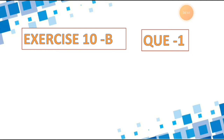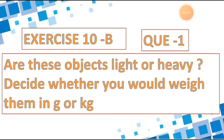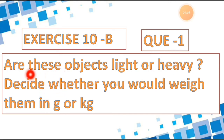Write down Exercise 10b and the question number. Let's start question number one. This is the instruction for this question — it is compulsory to follow and write down this instruction in your fair book. I will give you time to write it down. Let's read it: 'Are these objects light or heavy?'